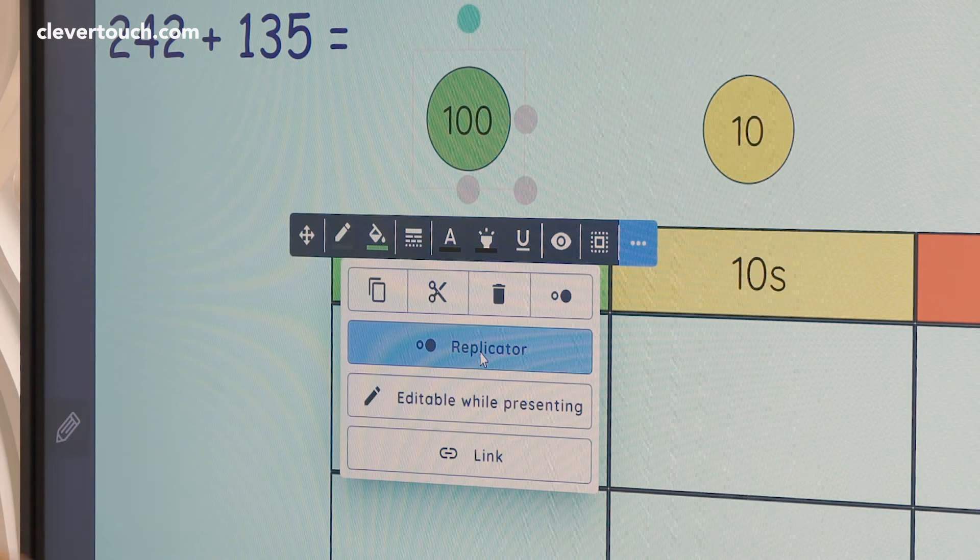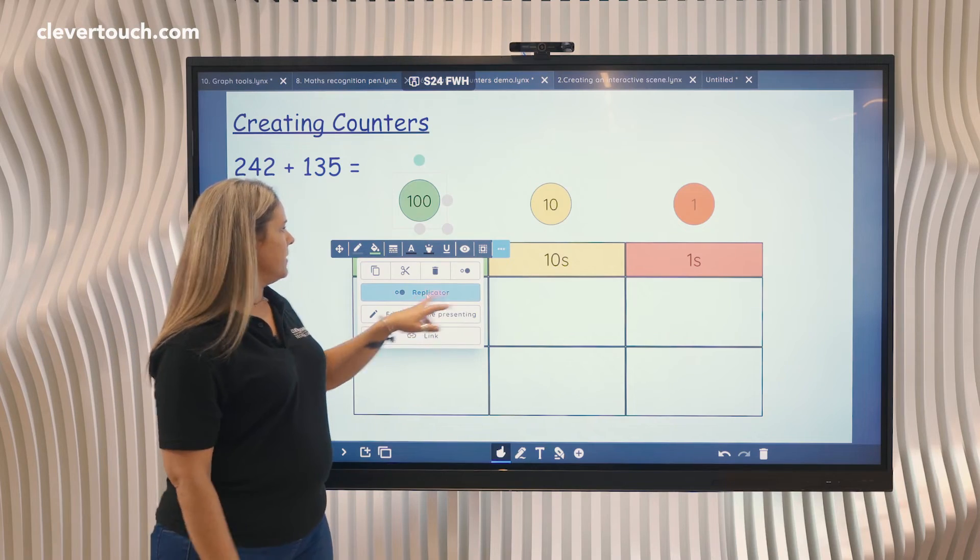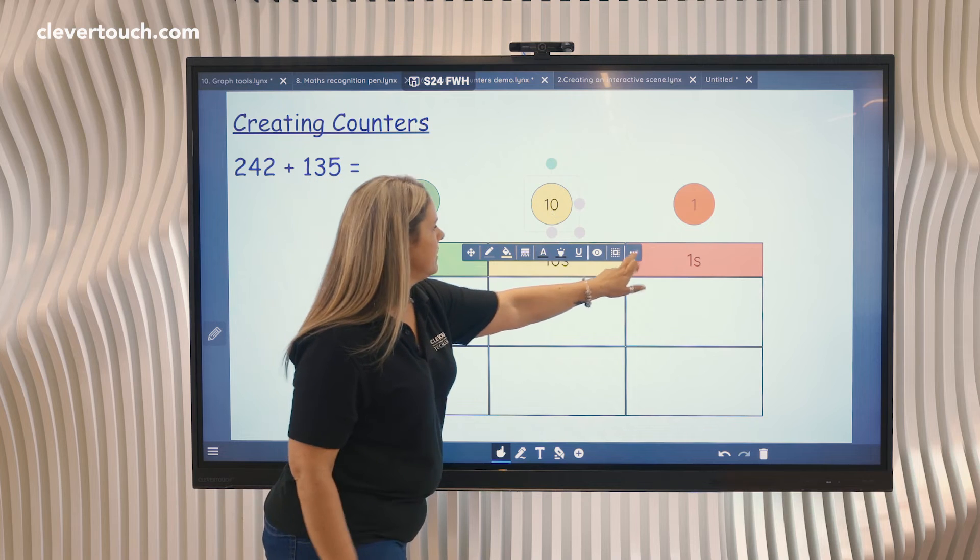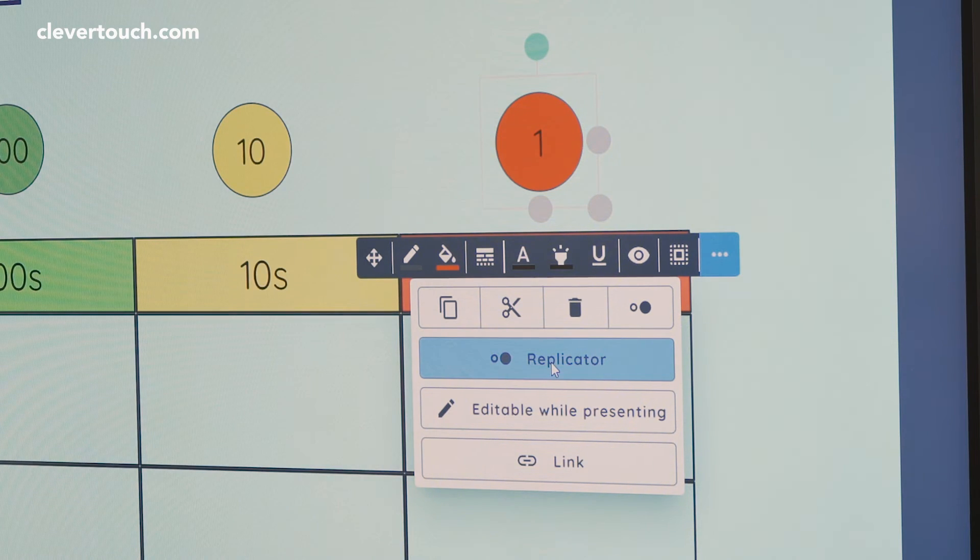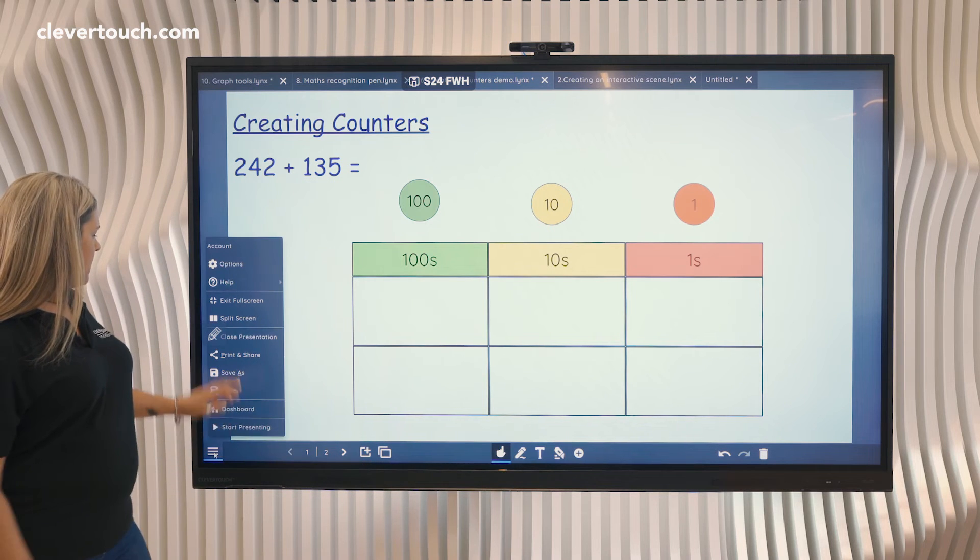So I just need to click on each of them: three dots, replicate; three dots, replicate. And now when I go into our presentation mode...